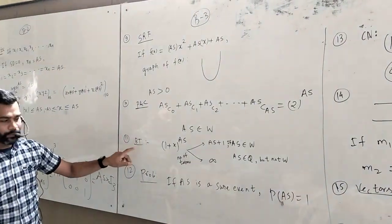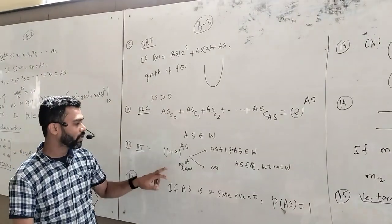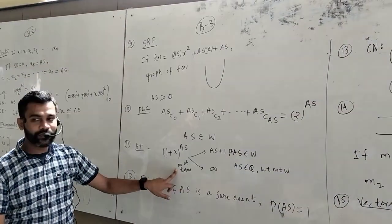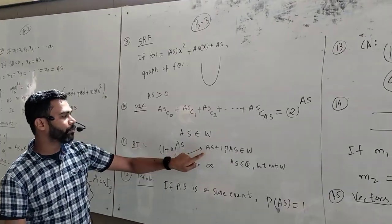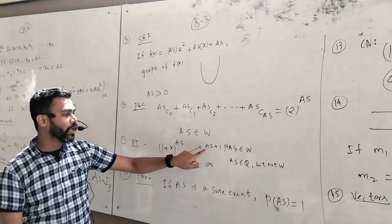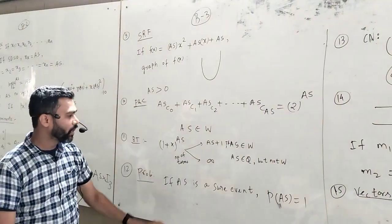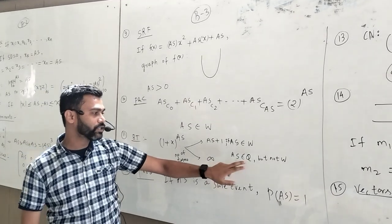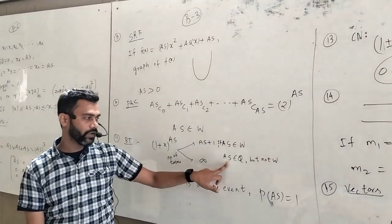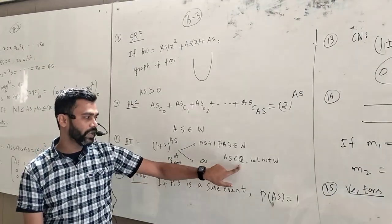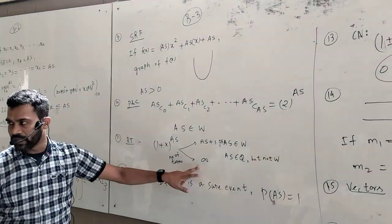Binomial theorem: (1 + x) to the power Anisar. The number of terms — if Anisar is a whole number, the number of terms will be Anisar + 1. If Anisar is not a whole number but a rational number, the number of terms becomes infinite.